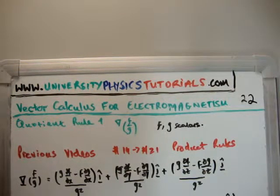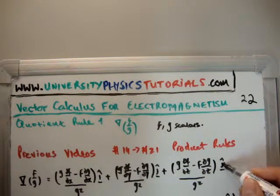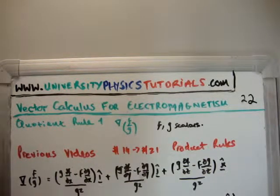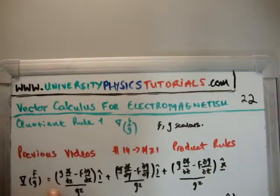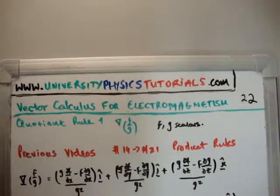Excuse me, I'm actually noticing a small typo. There, in the k-hat direction. Very straightforward. So that's just the normal quotient rule, very straightforward.